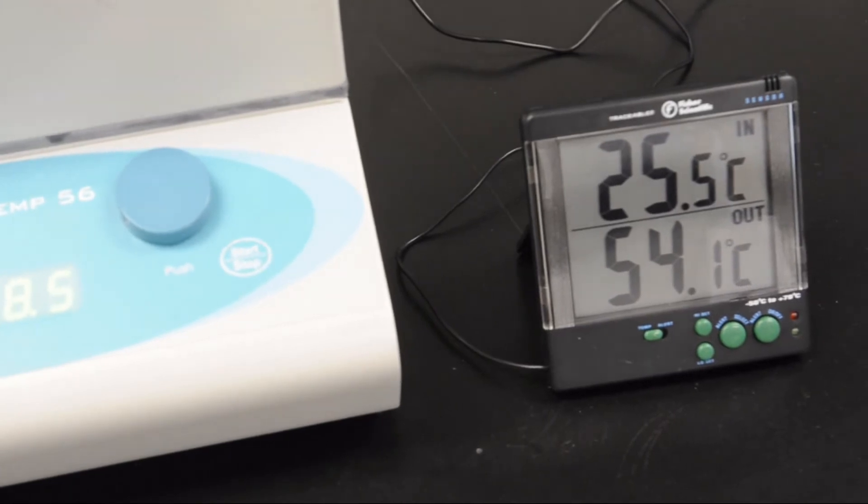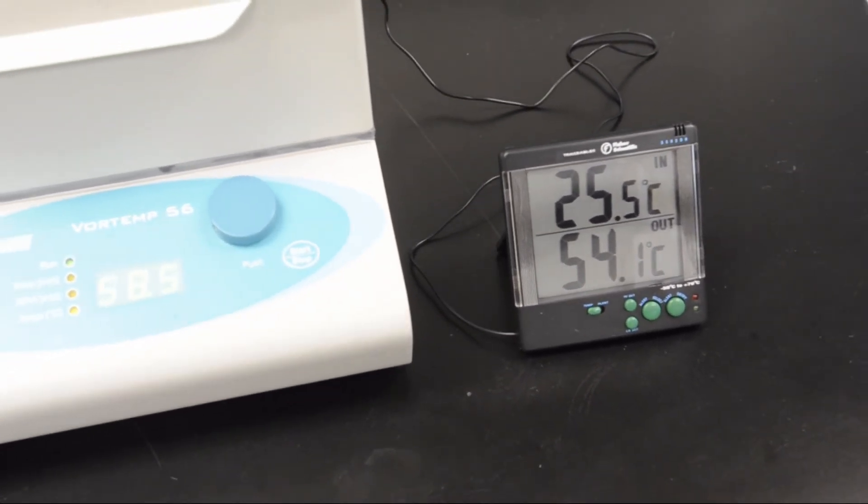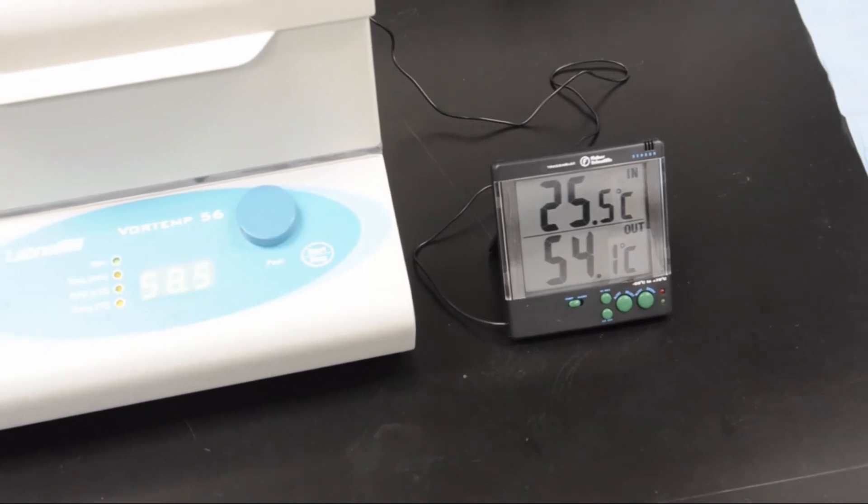The temperature displayed on the Vortemp unit and the temperature measured by the digital temperature meter can vary as much as 4 degrees.